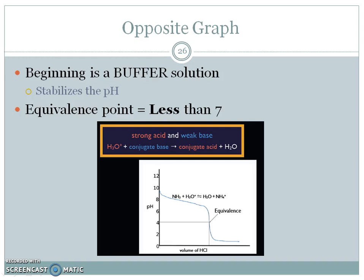We can also look at the opposite graph, where we're dealing with a weak base. We're starting with a weak base here, but we're titrating it with a strong acid. And we get basically the same type of curve. It's just opposite.